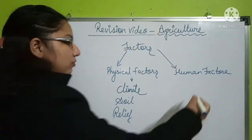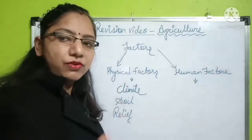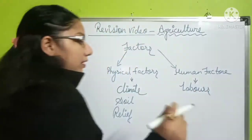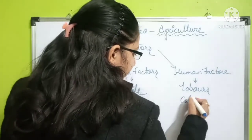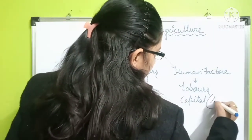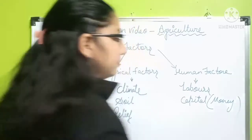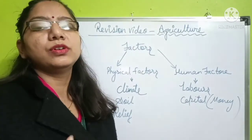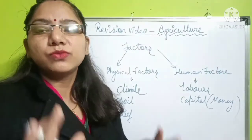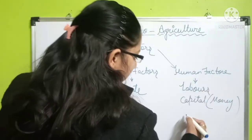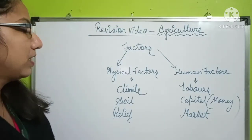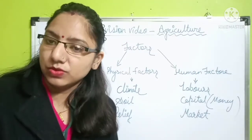Next is the human factor. The first main important factor is labor. Second is capital — here capital means money. And market is the most important factor, because agriculture is not only for the farmer's own consumption but also for economical beneficial values.